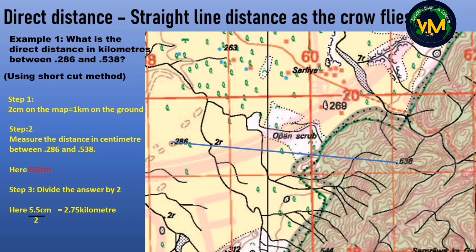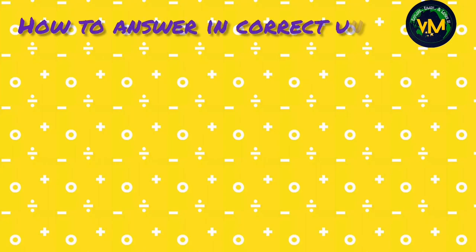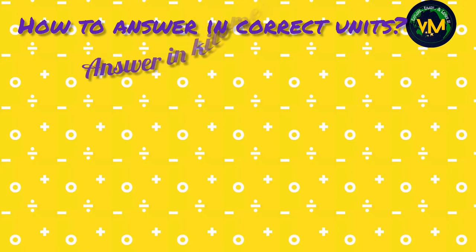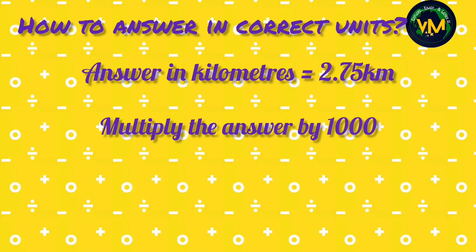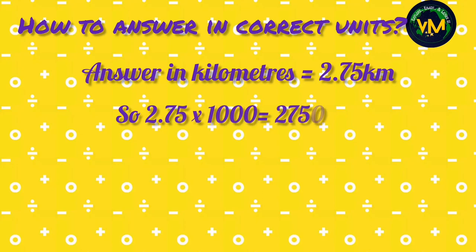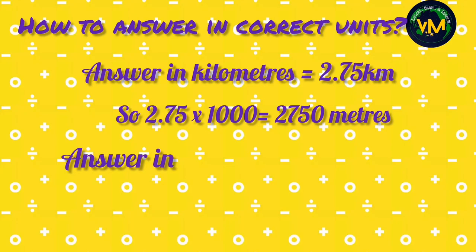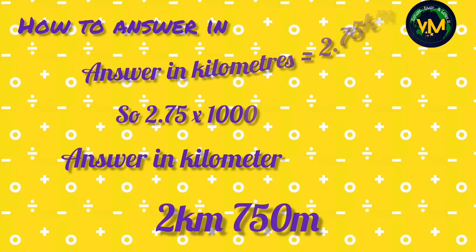Personally I feel the shortcut method is much more accurate and easy for students. Now, if the exam asks you to write the answer in meters, multiply by 1000 — that is 2.75 × 1000 = 2,750 meters. Or if asked in kilometers and meters, write it as 2 kilometers and 750 meters.